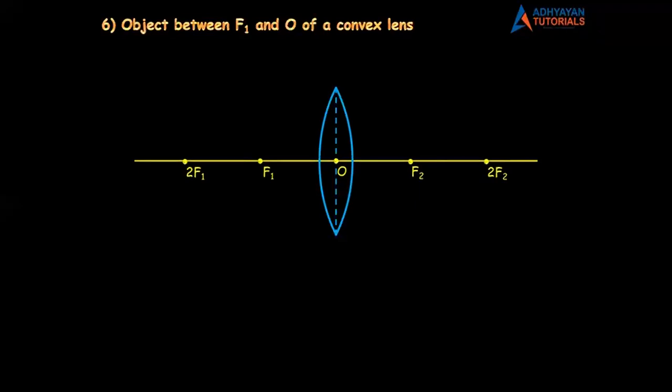Object between F1 and O of a convex lens. I have the basic diagram ready. As the question reads, I will place the object between F1 and O — object AB, one centimeter in size. Now I draw the rays. Ray number one: parallel, then passes through the focus. Ray number two: passing through the optical center, going straight without change in direction. If you are seeing it, the rays are not meeting.